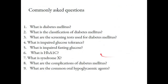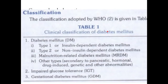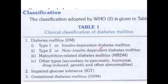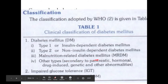What is the classification of diabetes mellitus? WHO classifies diabetes mellitus into three types: diabetes mellitus, impaired glucose tolerance, and gestational diabetes mellitus. Within diabetes mellitus: Type 1 is insulin-dependent with insulin deficiency; Type 2 is non-insulin-dependent with insulin resistance as the most common cause; then malnutrition-related diabetes mellitus; and other types secondary to pancreatic, hormonal, drug-induced, genetic, and other abnormalities.